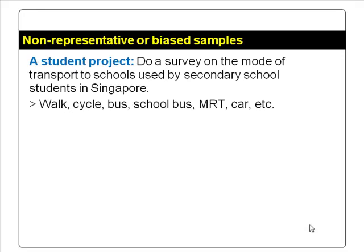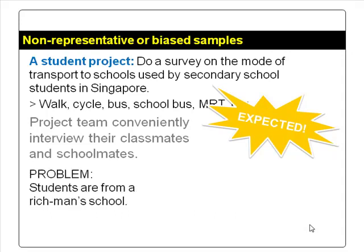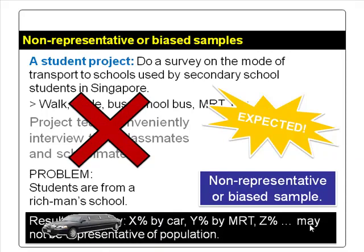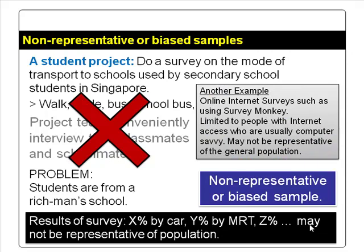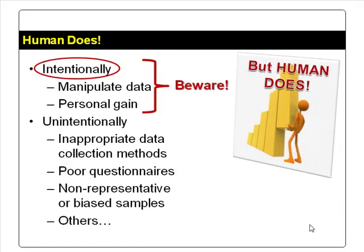Examples of non-representative or biased samples: a class project requires students to survey the mode of transport to school used by secondary school students in Singapore. The project team conveniently interviews their own classmates and schoolmates. The problem is the students are from a rich school, and a large percentage go to school by car. The results are probably not representative of the population because the sample is biased. Similarly, online internet surveys such as SurveyMonkey are limited to people with internet access, so you will not get a representative sample for a survey on wet market shoppers.